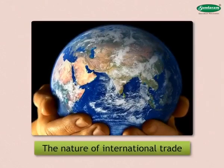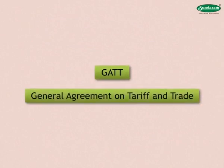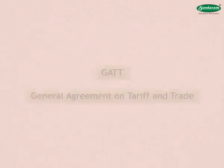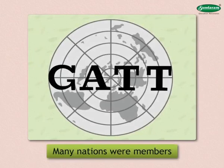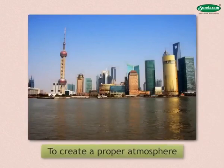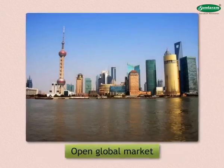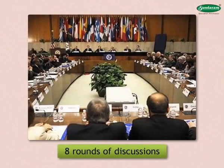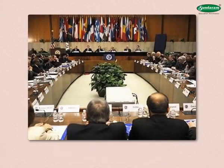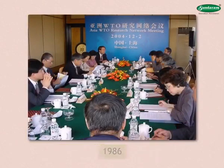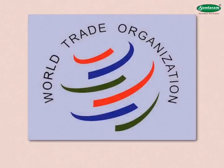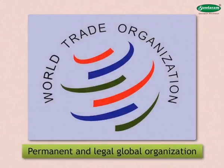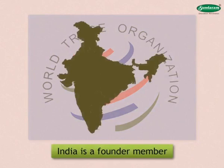The nature of international trade has started changing since the last decade of the 20th century. GATT — General Agreement on Tariff and Trade — was a global organization established in 1948. Many nations were members of this organization and its main aim was to create a proper atmosphere for an open global market. It held eight rounds of discussions. Through the discussions in GATT, the World Trade Organization was established in 1986 and became functional in 1995. The WTO is a permanent and legal global organization. India is a founder member of this organization.